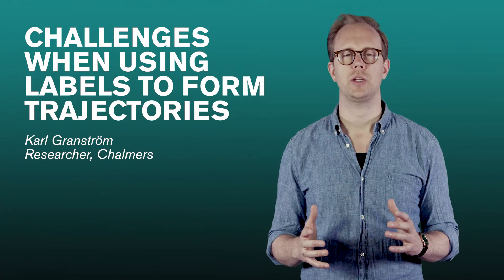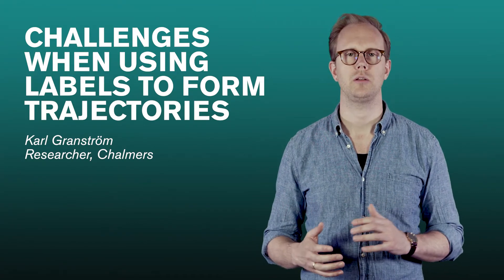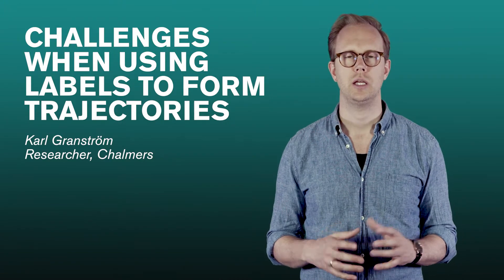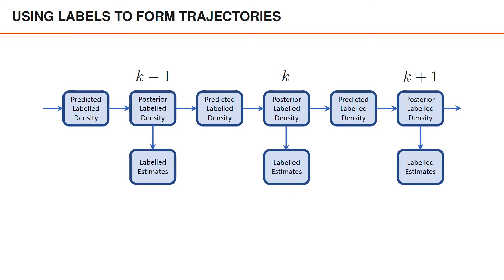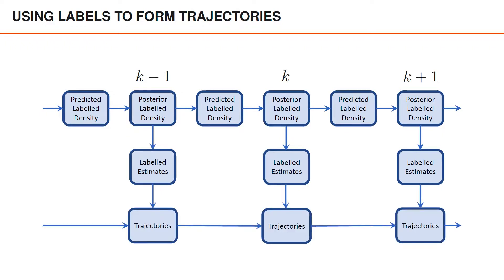In this video we will have a look at some practical aspects of using labels to form trajectories and some challenges that we face. Let's begin with reminding ourselves of how the trajectories are formed. We have the tracking recursion where the predicted label density is updated to the posterior label density, which is then predicted and so on. At each time step we extract labeled estimates from the posterior density, then take the trajectories from the previous time step and append the labeled estimates from the current time step, giving us the trajectories at the current time step.